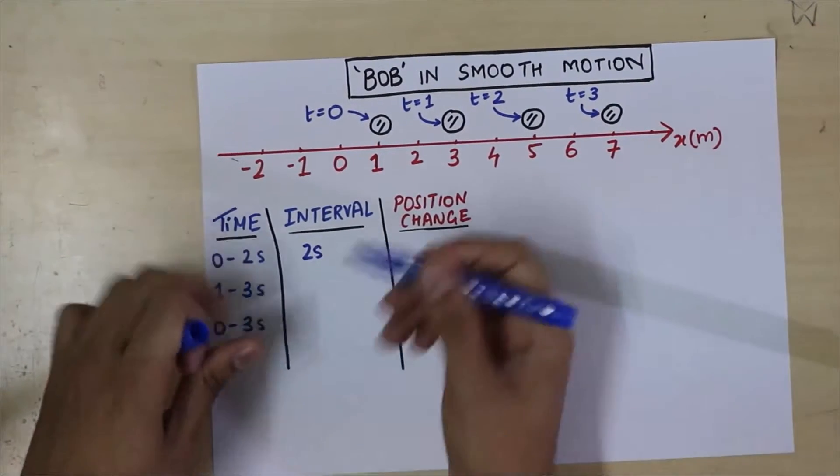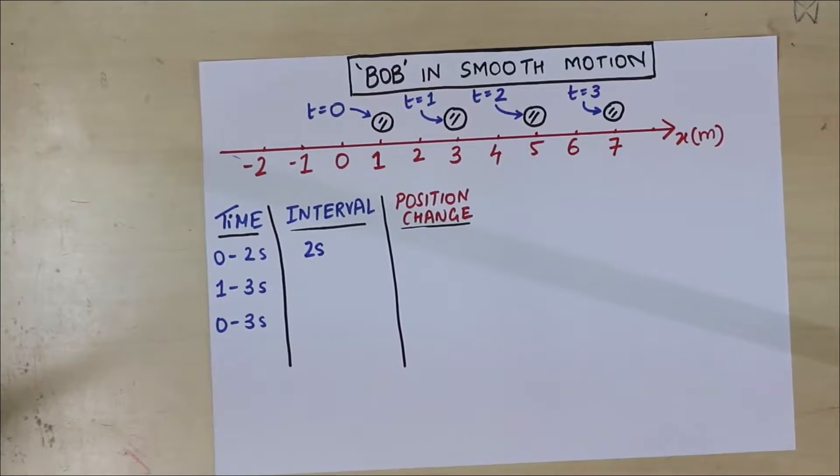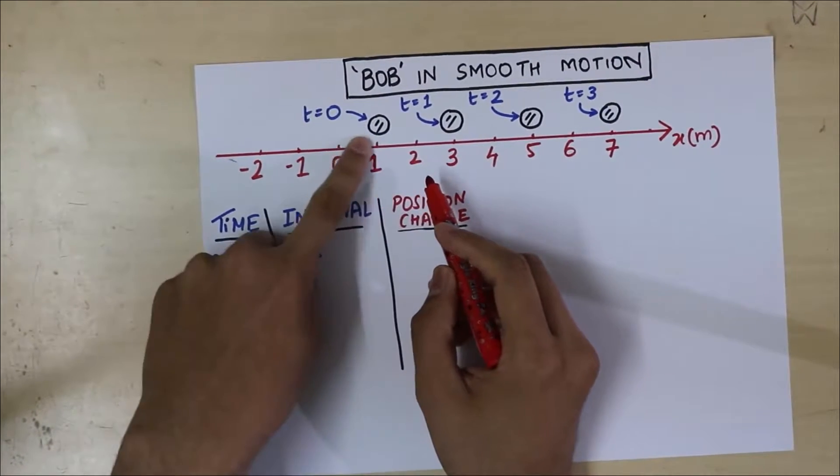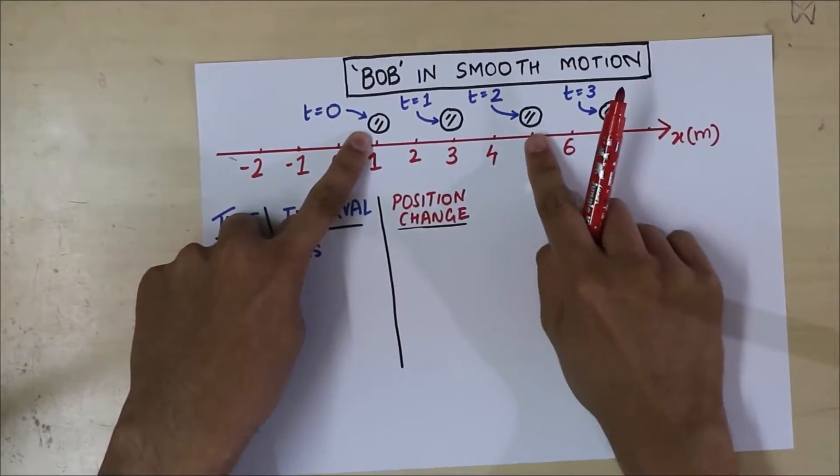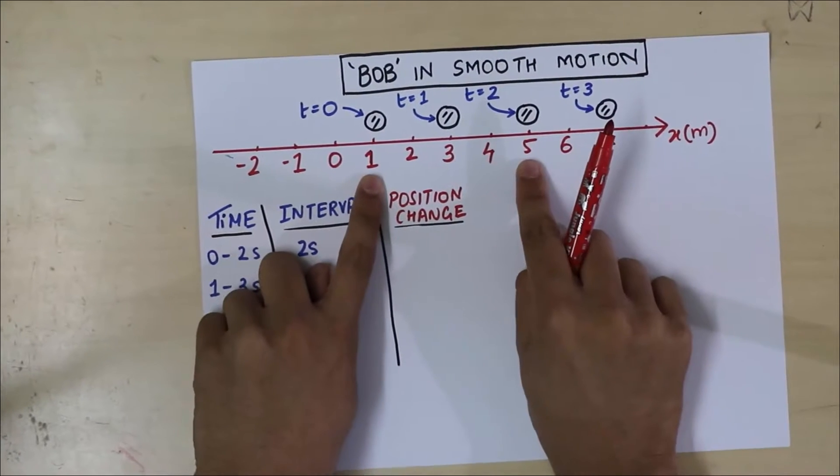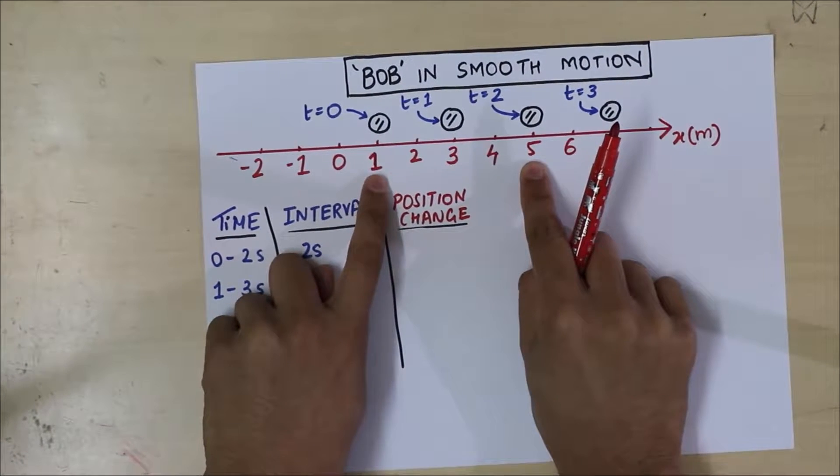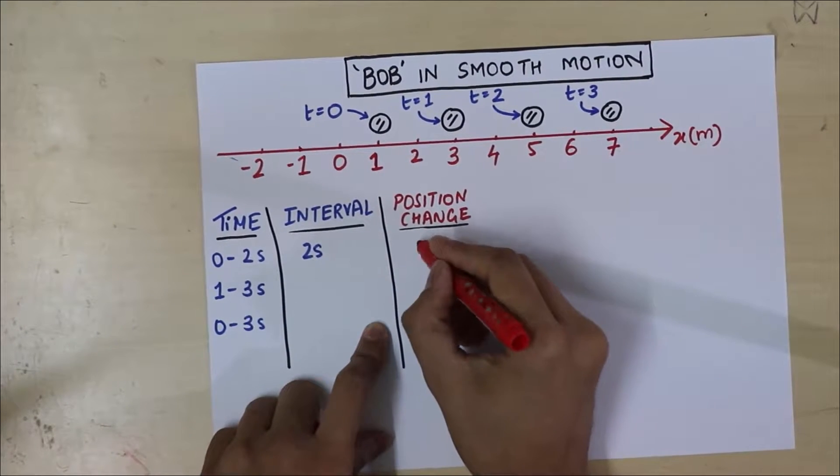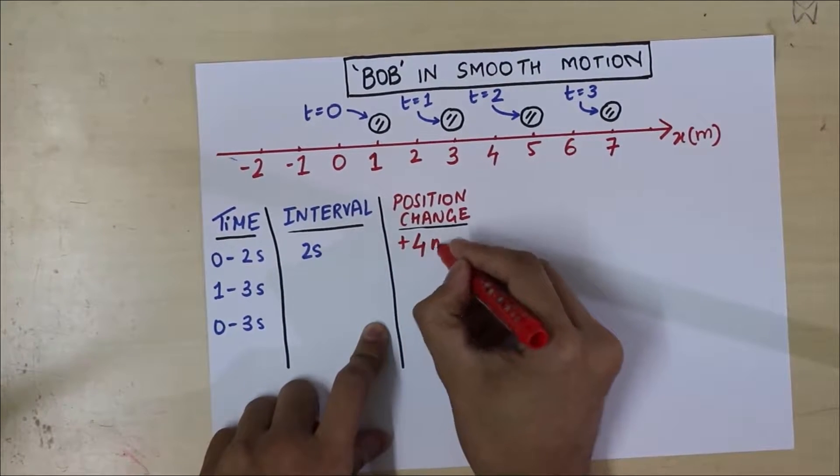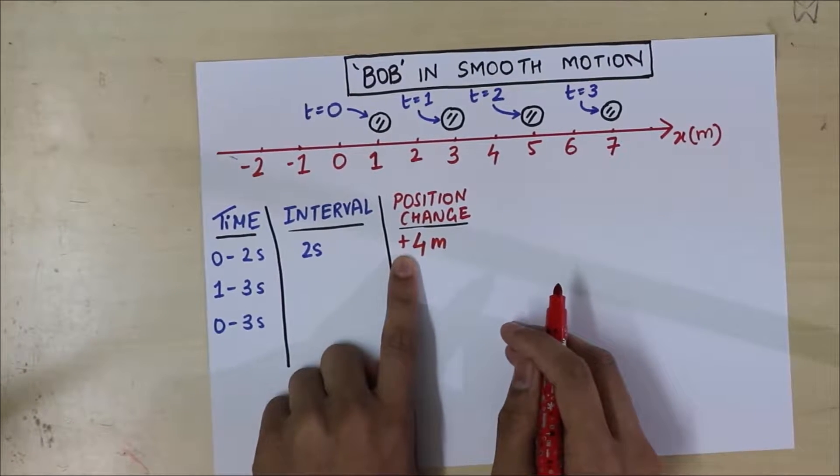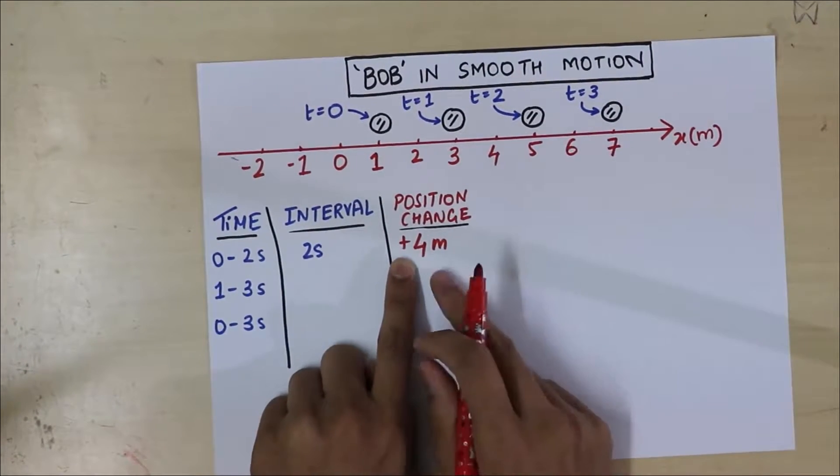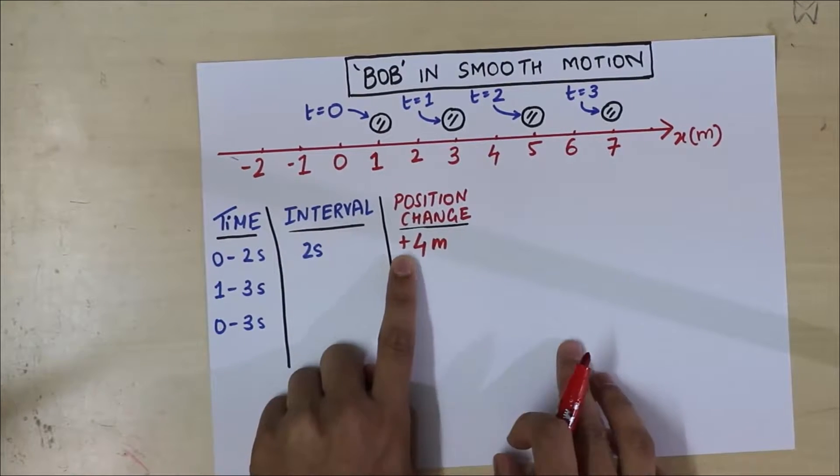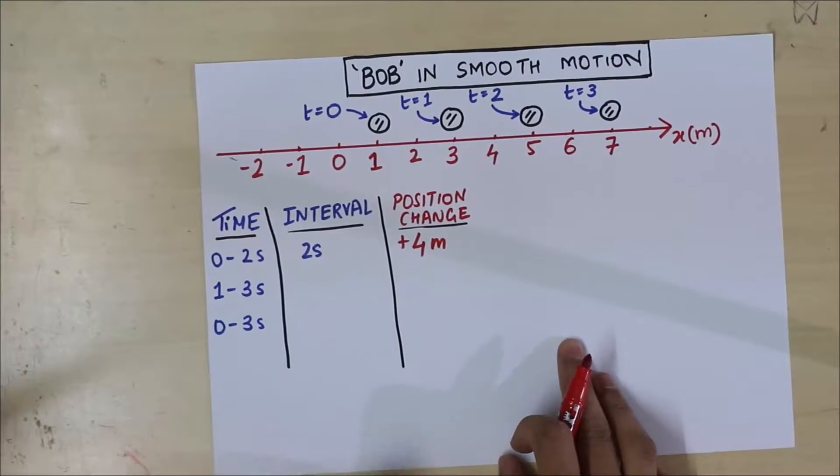So time span is 2 seconds. And can you think how much is the change in position? So it was over here to begin with, and it is right now over here. So how much has its position changed from 1 to 5? That is 1, 2, 3, 4. So the position change is plus 4 meter. Notice I'm putting a plus. The plus sign represents the position has increased.